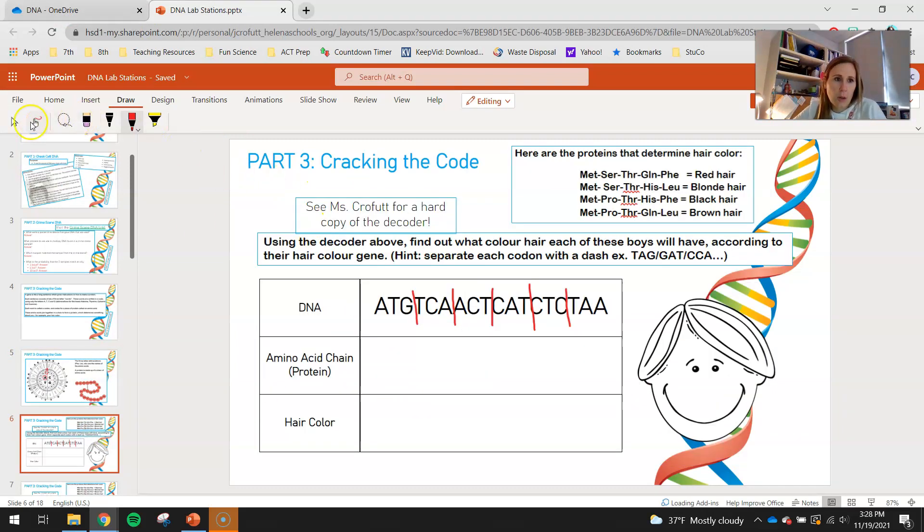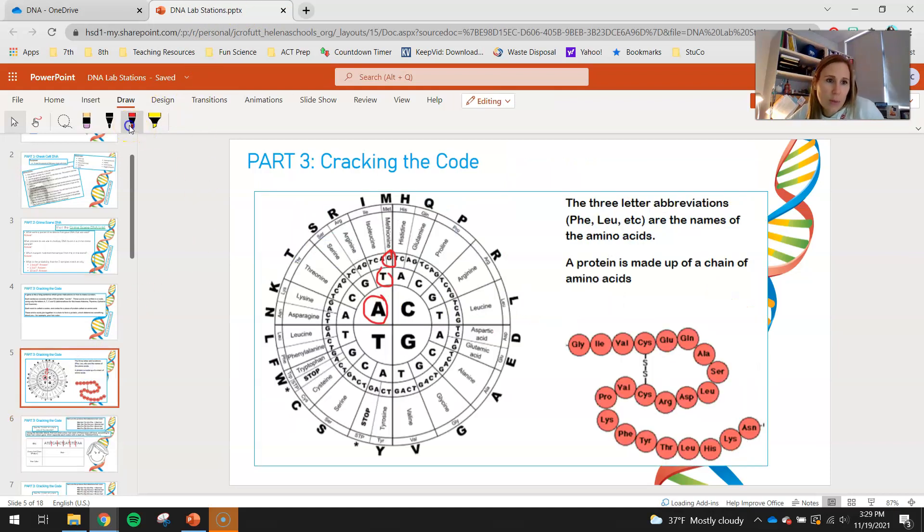So you guys would go back and you would type in MET. That's your guys' first amino acid in your chain of proteins. Then you guys would go T, C, A. I'm going to use a different color to show you guys, T.